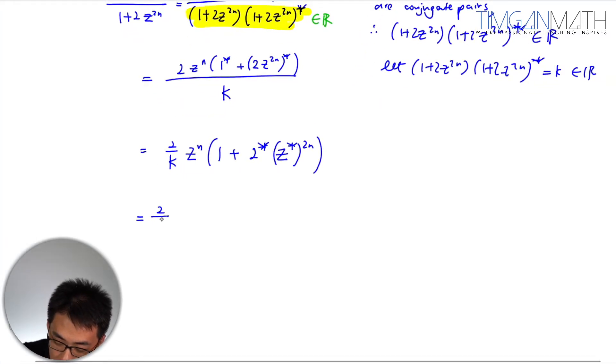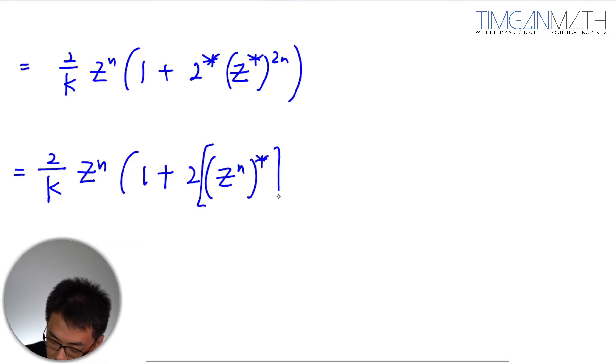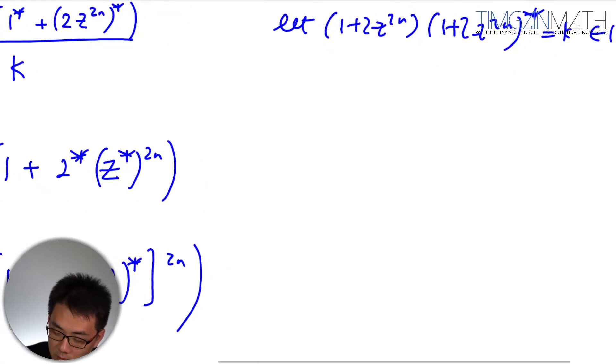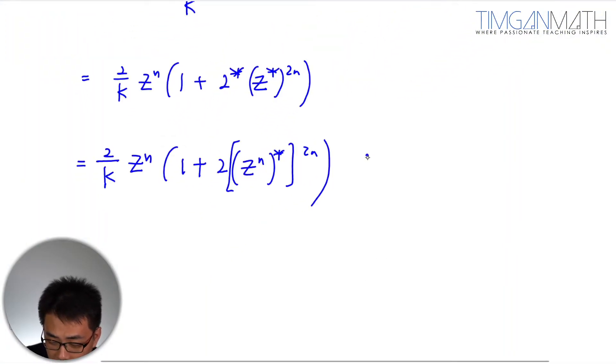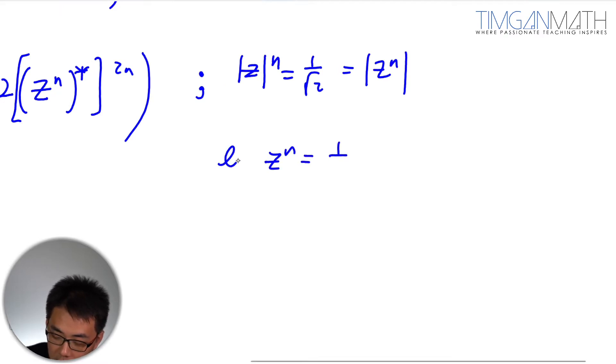Then we're going to examine what was given to us because we were given modulus of z^n. Modulus of z^n is actually 1 over root 2. I need the z^n conjugate because I was given modulus of z^n. So in other words, let z^n equals 1 over root 2 e^(iθ), and z^n conjugate will just be 1 over root 2 e^(-iθ).